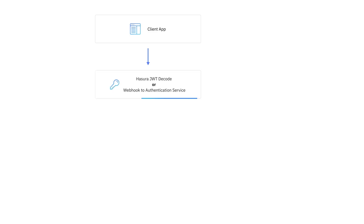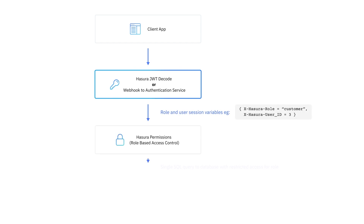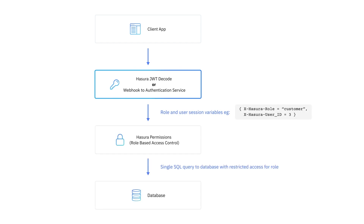Session variables can be provided to Hasura in JSON web tokens, from a webhook endpoint, or directly in the headers of the request via your own new or existing authentication service. Hasura also supports an unauthenticated role and full admin-level access.